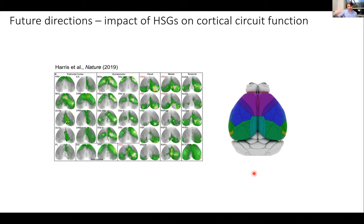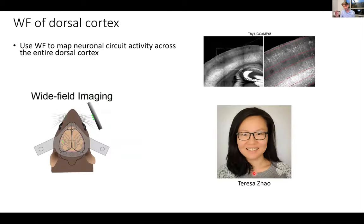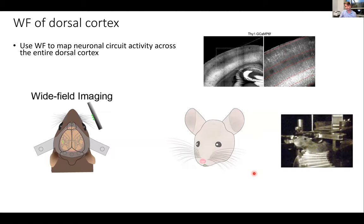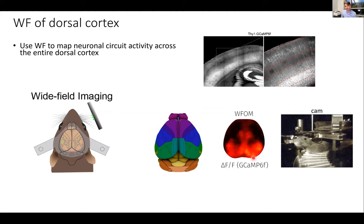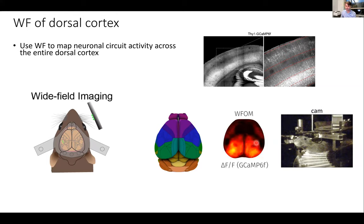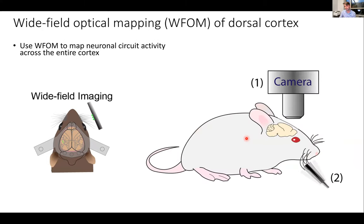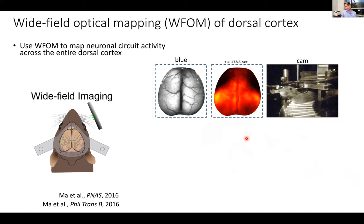If we change cortical-cortical connectivity with a human-specific gene, the question is how on a cortex-wide scale these circuit dynamics change. Dr. Theresa Zhao, now in my lab, is setting up wide-field imaging to study this. What you can see in this video is a mouse at rest — resting state activity — and the corresponding wide-field circuit dynamics across the entire dorsal cortex are already remarkably dynamic. We want to combine that with our behavioral paradigms and whisker stimuli to study how SRGAP2C, by changing cortical-cortical connectivity, changes information flow across the cortex.